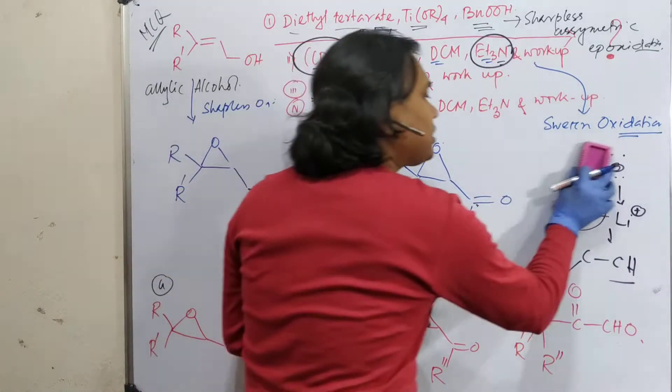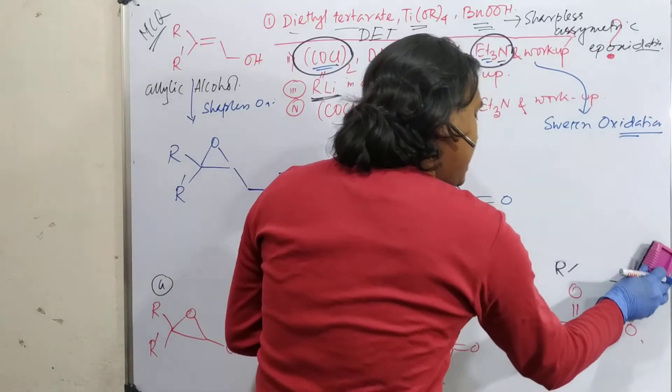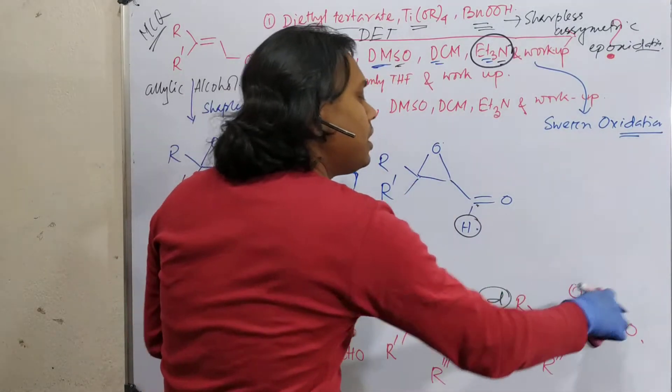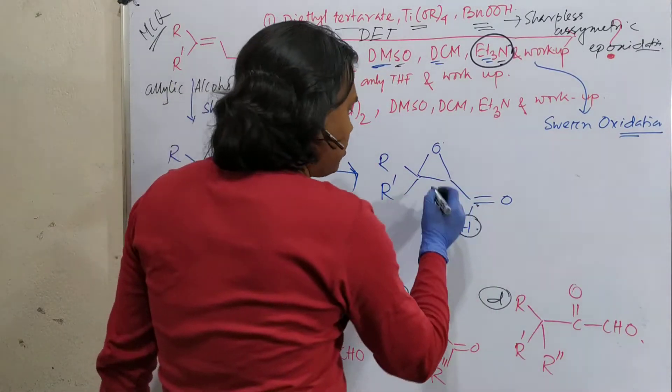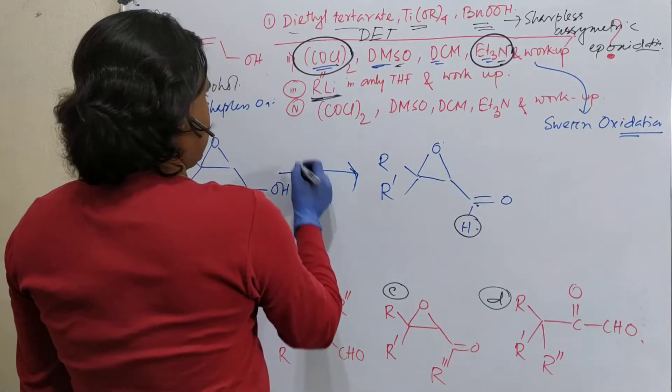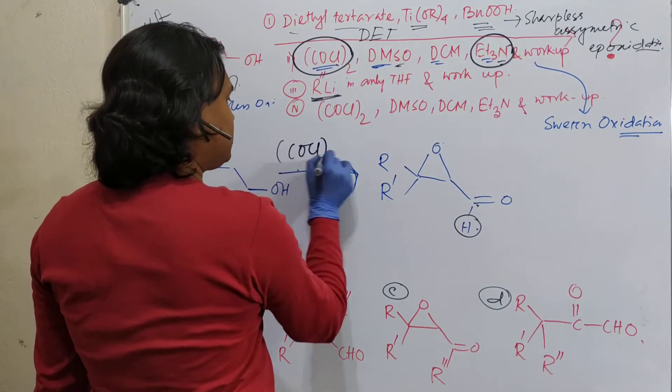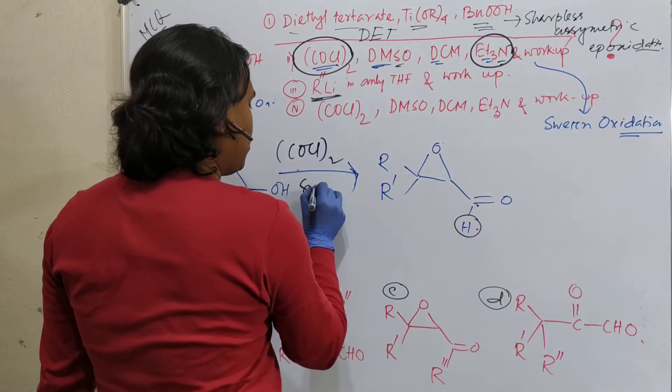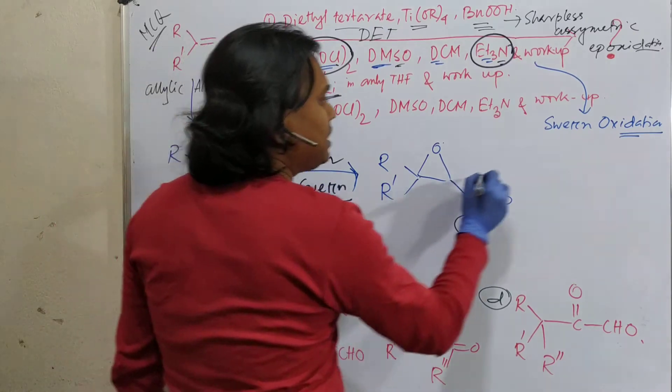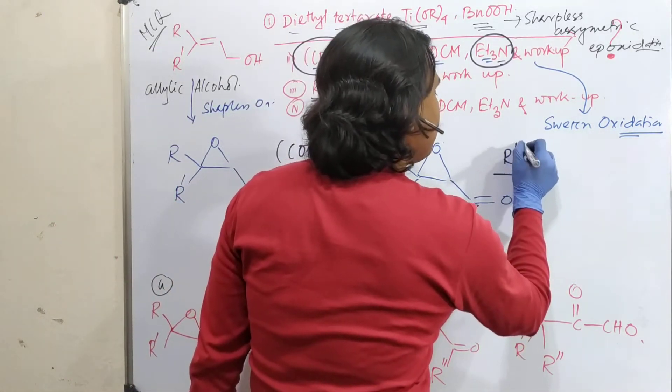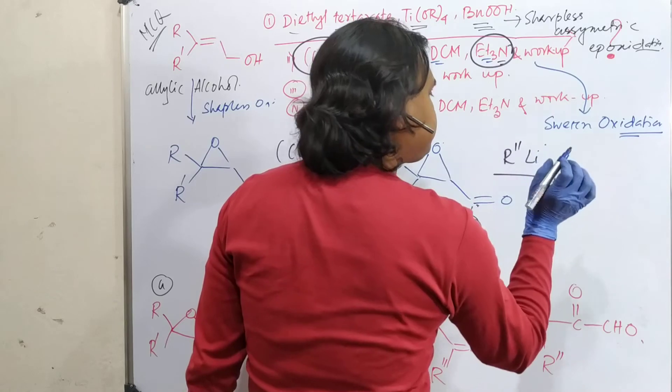So aldehyde, what will be the fate of this aldehyde? Aldehyde will be converted into a secondary alcohol. So sorry, this is actually COCl2, Swern oxidation, and this is R double prime Li and then workup.